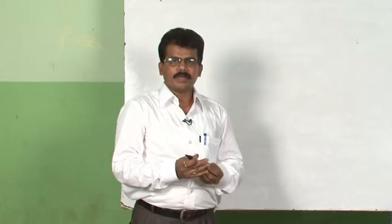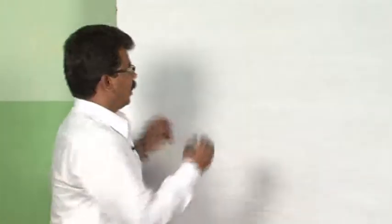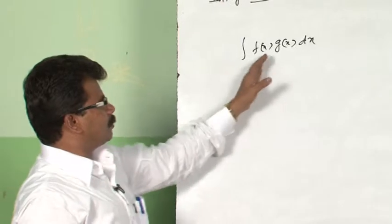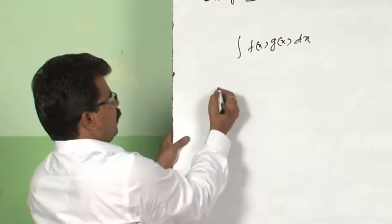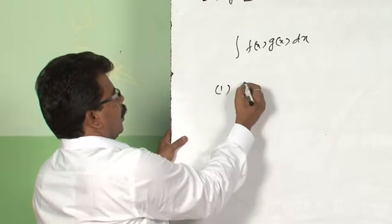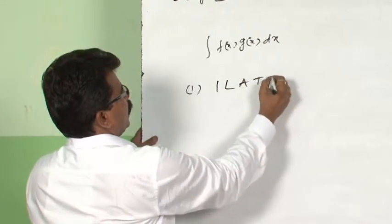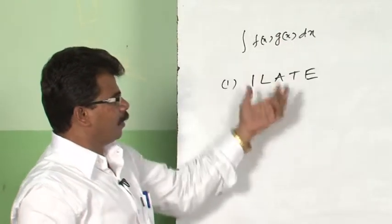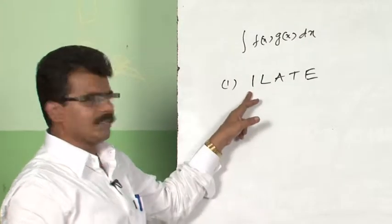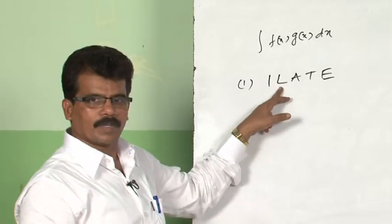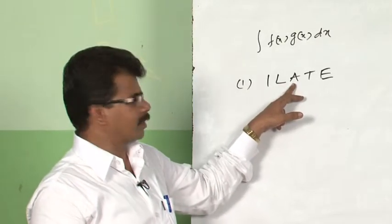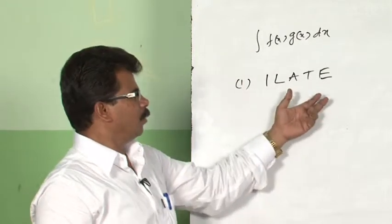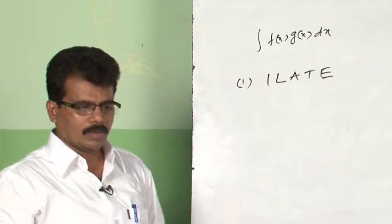Just now we have seen how to find the integral of a product of two functions like ∫f(x)·g(x)dx. While taking the first and second functions, we have to follow the order of ILATE: I for inverse trigonometric, L for logarithmic, A for algebraic, T for trigonometric, and E for exponential function. In this order we take the first and second functions to avoid lengthy integration.